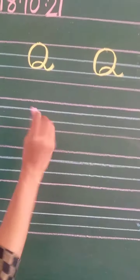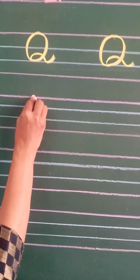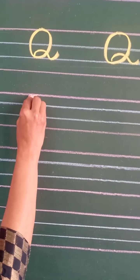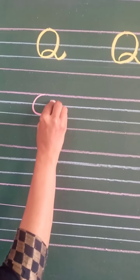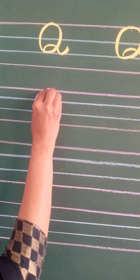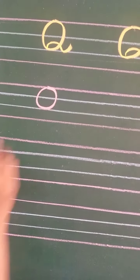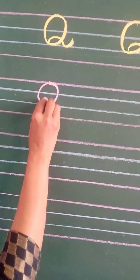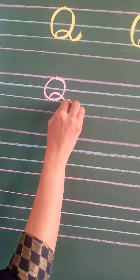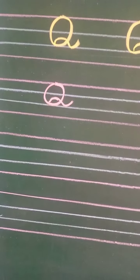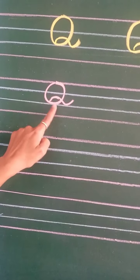Look here. First of all, from the red line, make a curve, go down till the second blue line, come up and touch the red line. Now we will make a curve from here and touch the second blue line. This is Q.